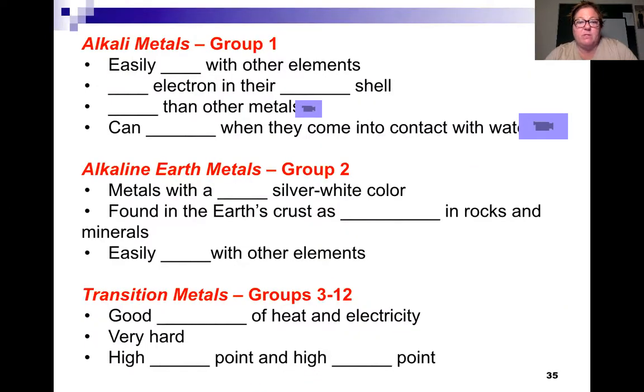The alkaline metals in group one easily react with other elements. They have one electron in their valence shell. They are softer than other metals, and they explode when they come into contact with water.